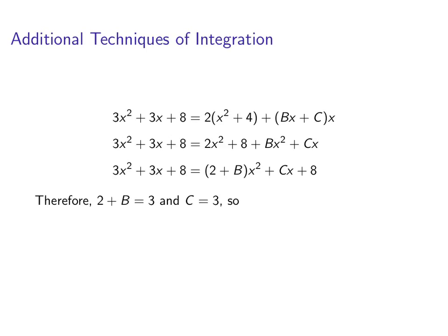Okay. That tells us that 2 + B is equal to 3 because we match up the coefficients. And, even easier, C is equal to 3. So, that gives us B. So, B is equal to 1. Okay. So, let's see what we got.